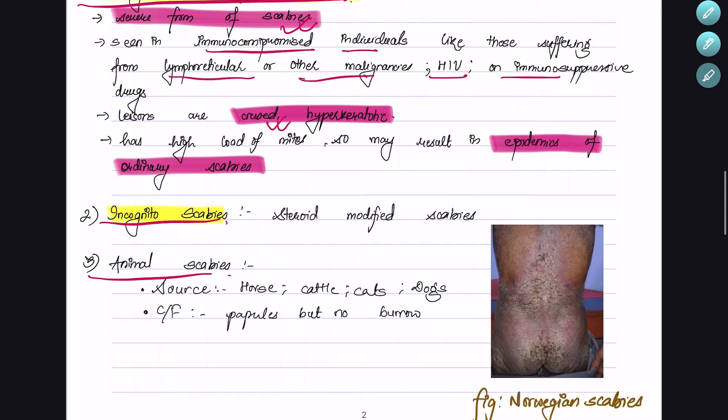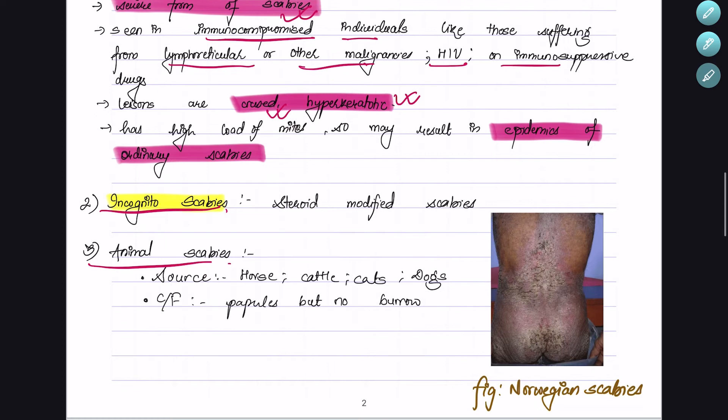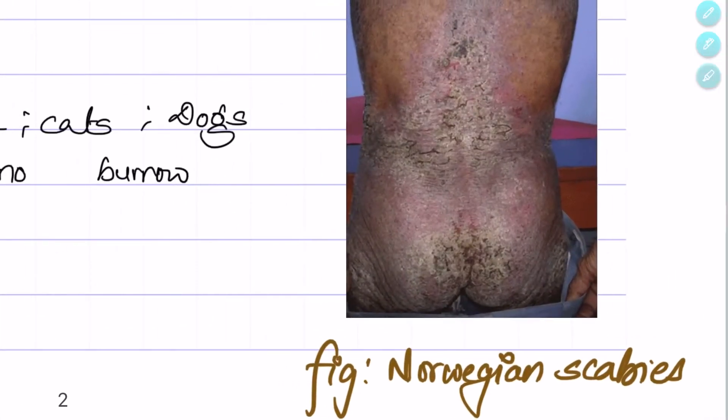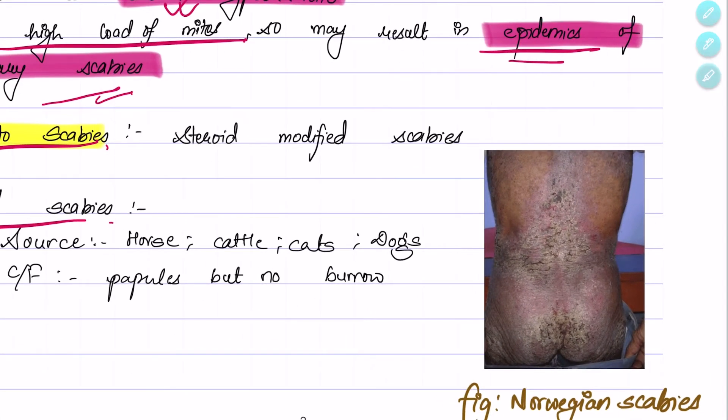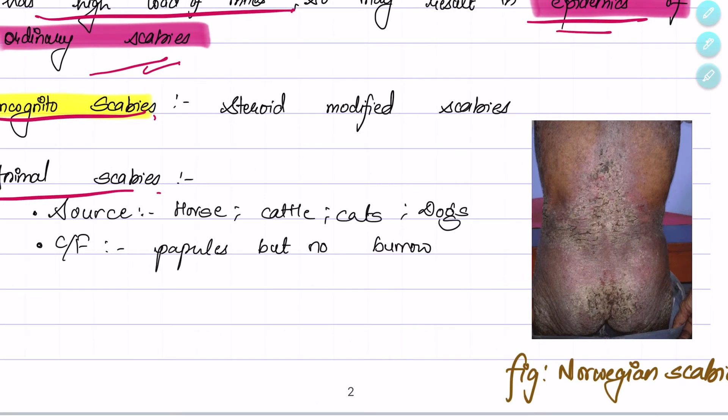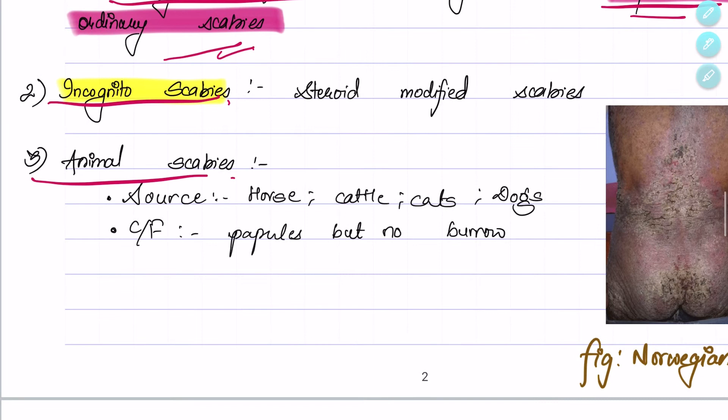The lesions are crusted and hyperkeratotic. Since this form of scabies has a high load of mites, it may also result in epidemics of ordinary scabies. This is a picture of Norwegian scabies—the lesions are seen in the back and buttocks.